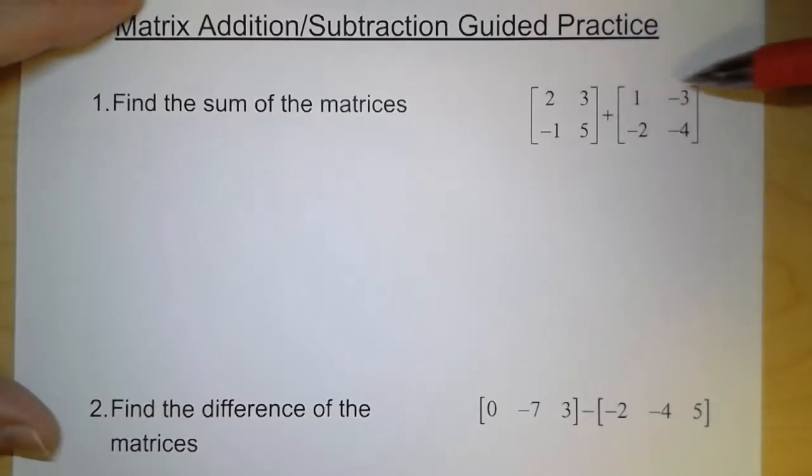So for this first one, we have that. These are both 2 by 2 matrices. So when we add them, what we do is we just add the corresponding parts.